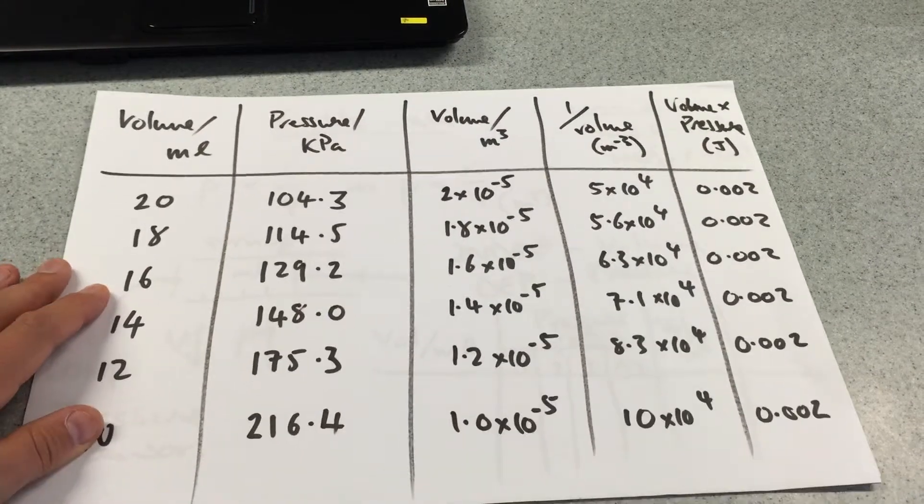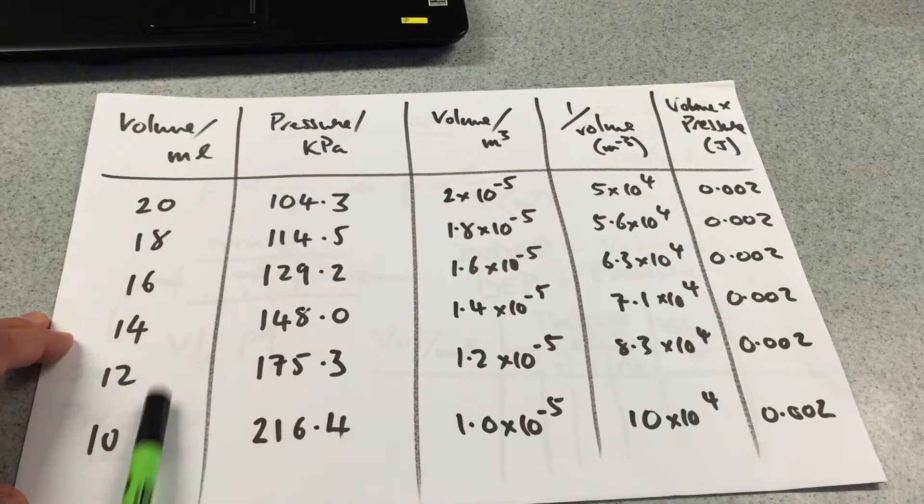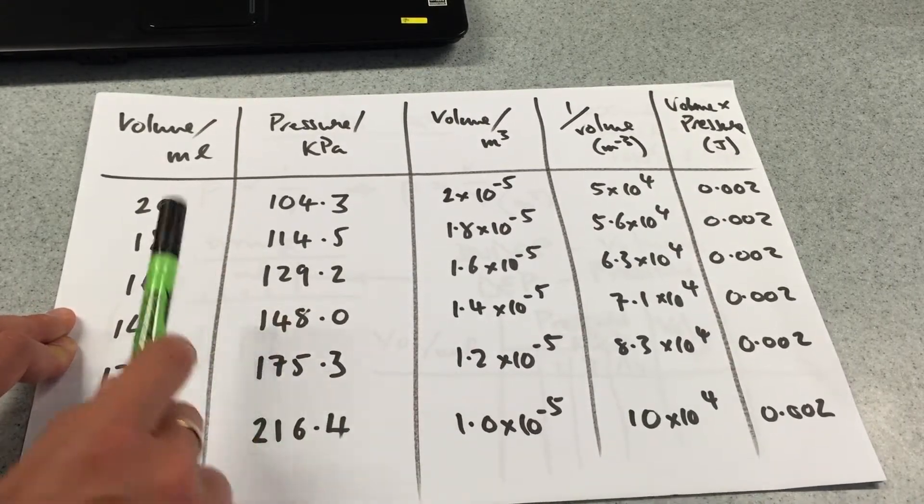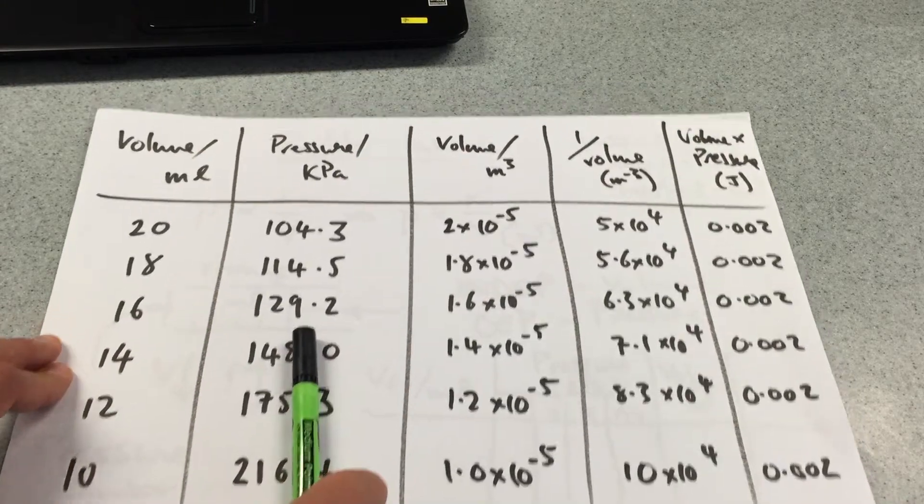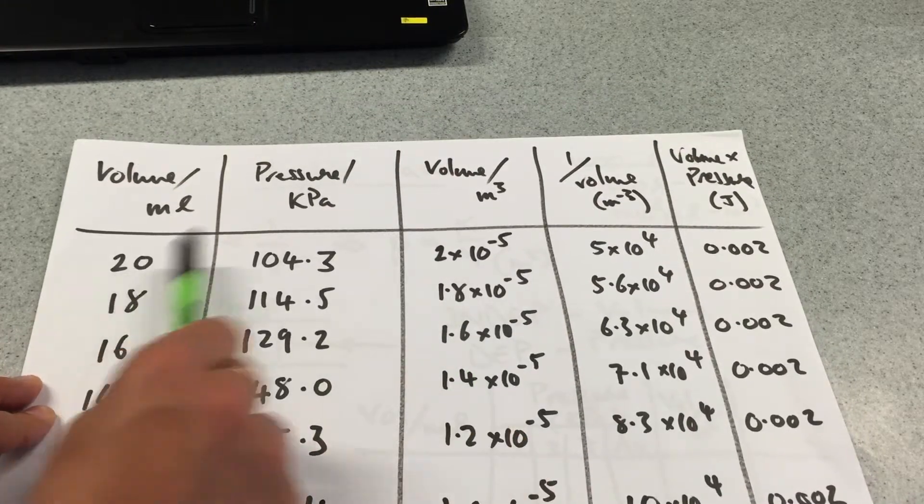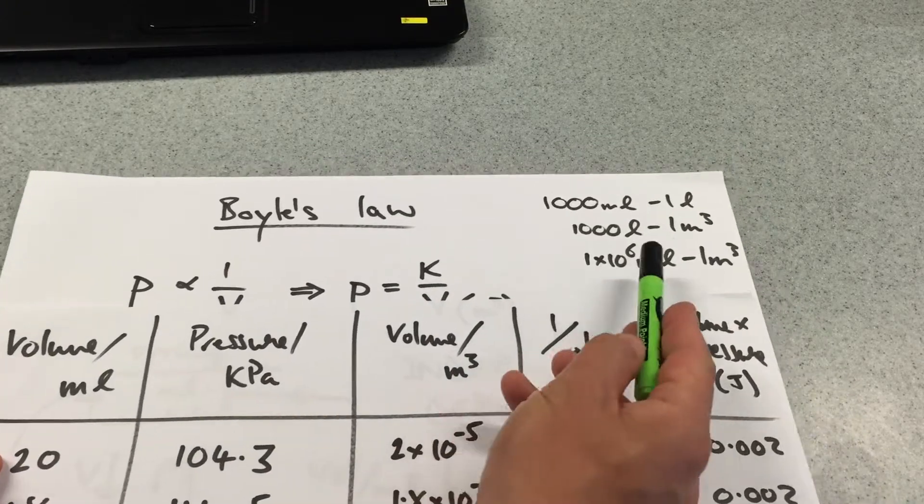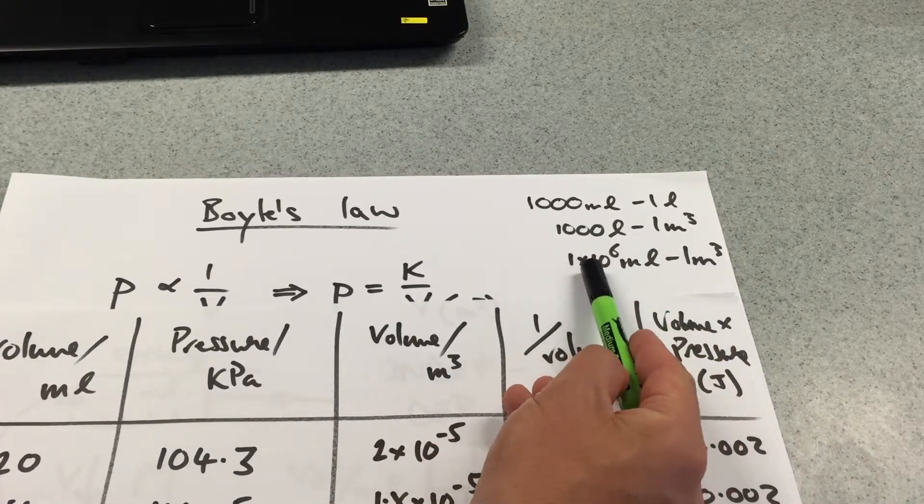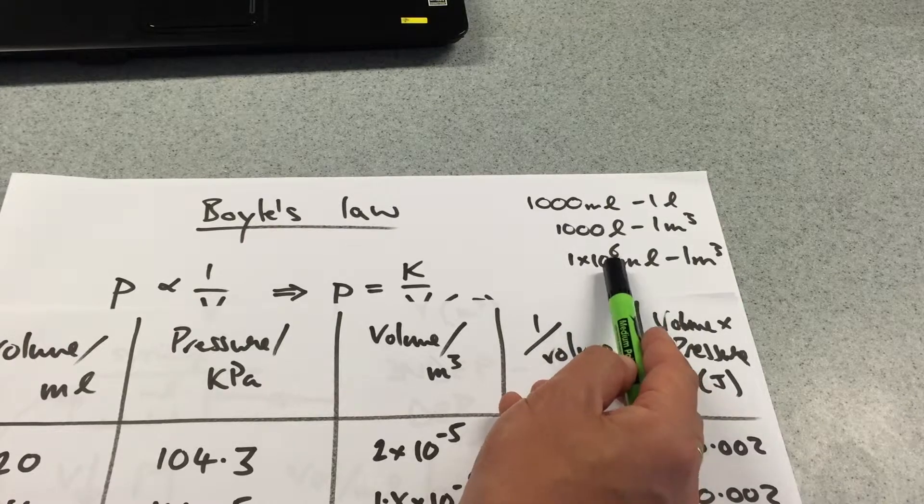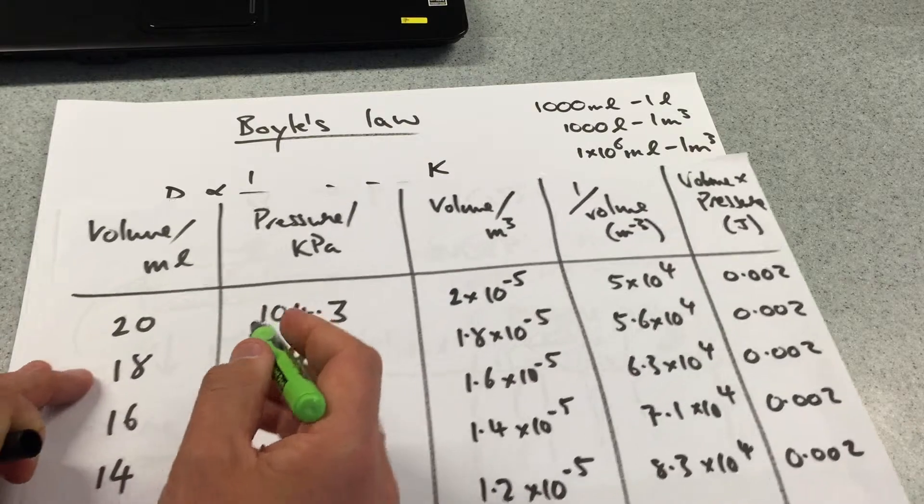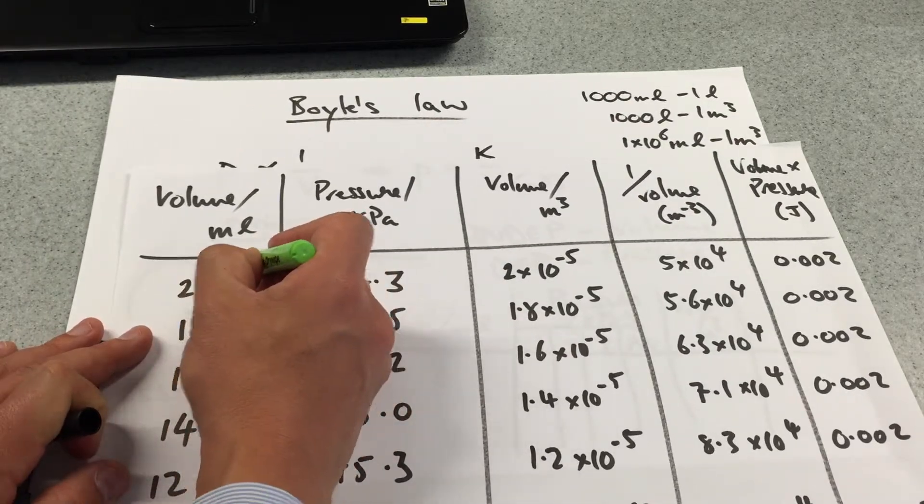Okay so here are our results. I took those from the screen and those from the screen so our independent variable, our dependent variable and then I converted 20 to that by using the conversion I talked about up here. In other words I divided by 1 times 10 to the 6 because I know there's 1 times 10 to the 6 milliliters in 1 meter cubed. So this in effect I divided in order to get from there to there.